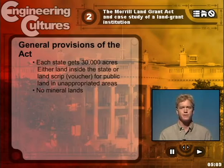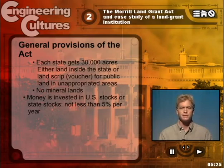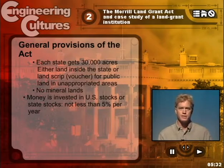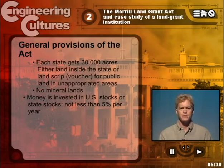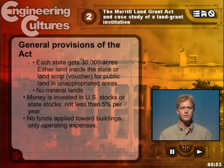The act also stipulated that mineral lands — lands with mineral resources — could not be used. The money from the sale of the land or the land script was to be invested in stocks of the United States or of the states themselves, yielding not less than 5% interest per year, with the goal of producing a perpetual fund. This was a clever move because the act was, in a way, forcing state matching money to get these colleges up and running. No funds were to be applied towards buildings — the states had to somehow come up with the buildings — only for operating expenses. They knew that there were many schools that would get started but couldn't continue because of high cost and insufficient income.